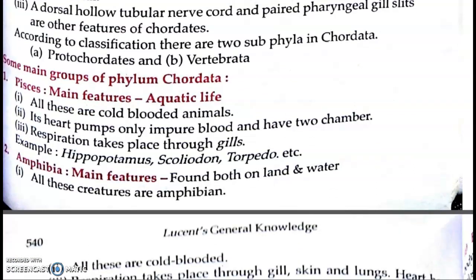Some main groups of phylum Chordata. Ab directly groups ko discuss karte hain. Phylum Chordata ke main groups mein Vertebrata aate hain — unhe baad mein discuss karenge. Sabse pehle baat karte hain Proto-chordata ki. Proto-chordata yaani ki Chordata se just pehle wale, thode kam developed hote hain Chordata se. Yeh bhi Chordata phylum mein hote hain. Inke features: bilaterally symmetrical, triploblastic, coelomate hote hain aur inke andar Notochord bhi hoti hai — sabhi wahi features aayenge jo Chordata mein hain.